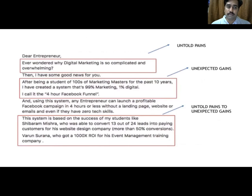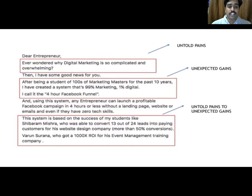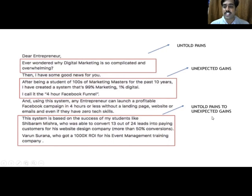Then: 'I have some good news for you' - and you're telling about an unexpected gain. 'After being a student of hundreds of marketing masters for the past 10 years, I have created a system that's 99% marketing and 1% digital. I call it the four-hour Facebook funnel.' So you are actually telling him that by joining my session, you would be gaining something called the four-hour Facebook funnel. And then you are talking about how the untold pains can be converted into unexpected gains. This system is based on the success of my students - so you are doing social proofing here.